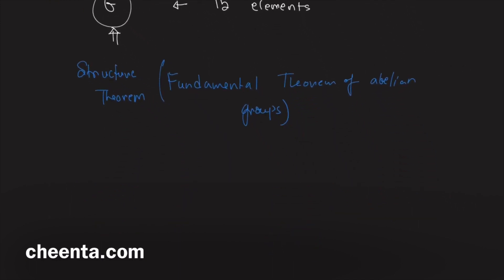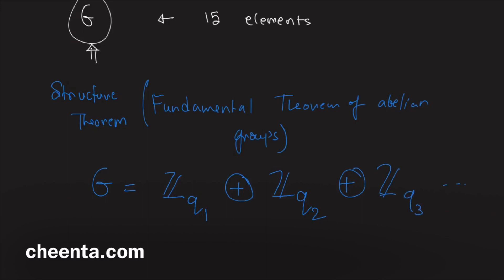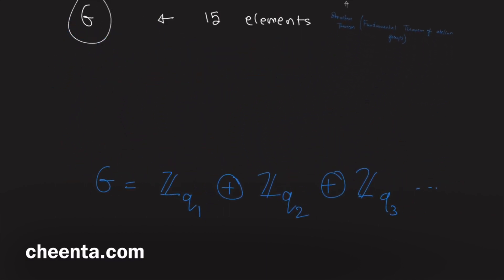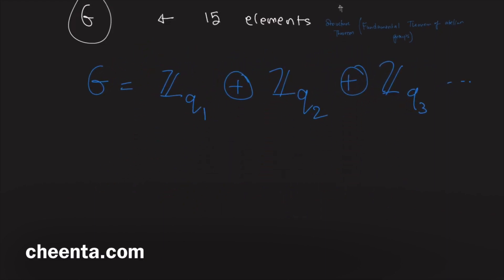The Fundamental Theorem of Abelian Groups says that G is equal to the direct sum of Z_{Q1}, Z_{Q2}, Z_{Q3}, and so on, where Q1, Q2, Q3 are powers of primes.